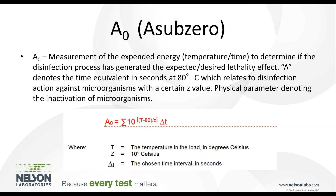Typically, you're looking for an A-0 of 600 for a non-critical device or a device that will be terminally sterilized, and 3,000 for a device that does not require further sterilization and will be used directly after. Most washer disinfectors are capable of this, but you want to confirm the washer can achieve A-0 of 3,000. This is outlined in ISO 15883.